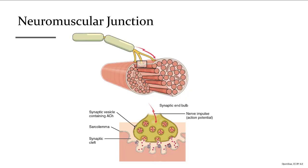Each end of the nerve that interacts with the muscle fiber is called a synaptic terminal. The relationship between the synaptic terminal — the end of the neuron — and the sarcolemma, which is the muscle cell membrane, is known as the neuromuscular junction. Zooming into the neuromuscular junction, we can see how the nerve activates the muscle.